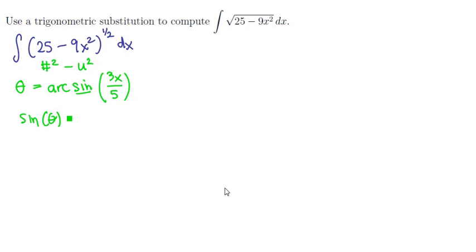So we'll solve it for x. We get sine of theta is equal to 3x over 5 or 5 thirds the sine of theta is equal to x.